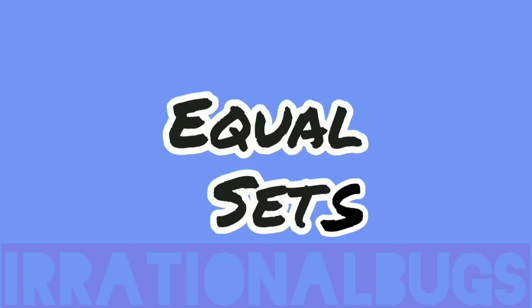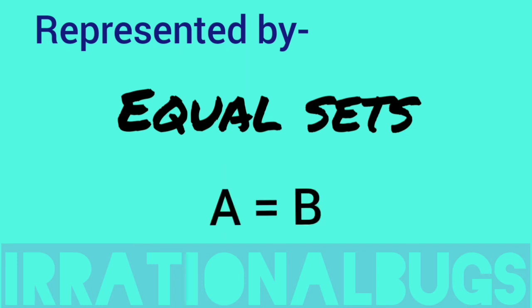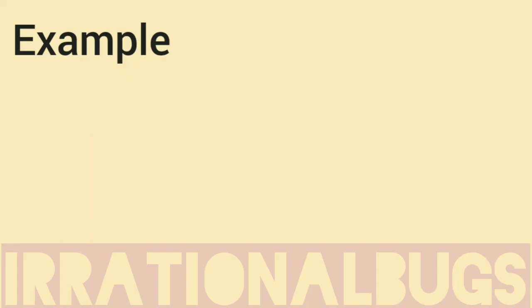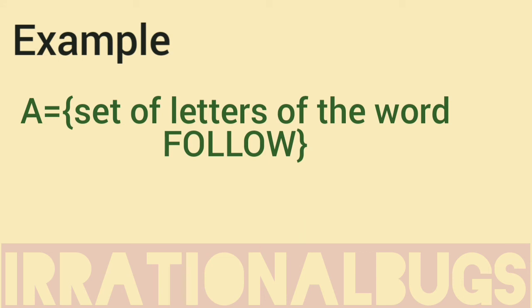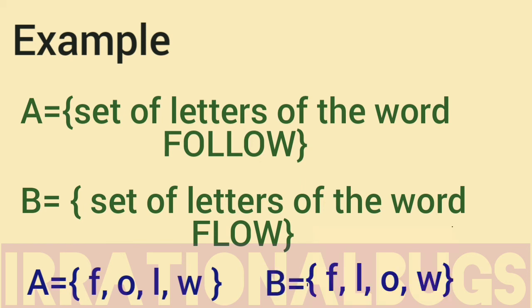Further, we have equal sets. Two sets are equal if both the sets have same elements. Identical elements should be there. If one has A, then the other should also have A. So, if two sets have same elements, then they are equal sets. Equal sets are represented with normal equal sign, A equals to B. Taking set A as set of letters of the word follow. Taking set B as set of letters of the word flow. Writing A in roster form, elements are F, O, L. L repeats, O repeats. W. So, F, O, L, W. Set B in roster form: Flow. F, L, O, W.